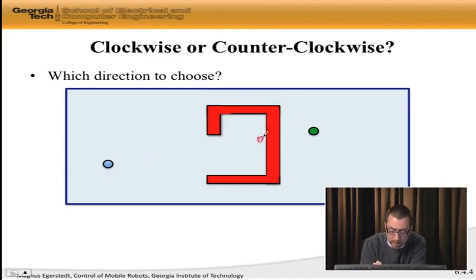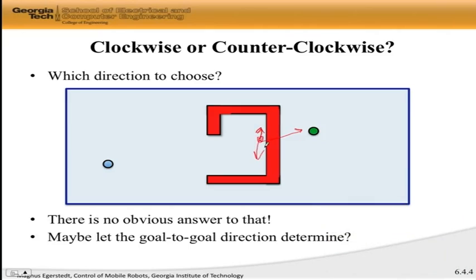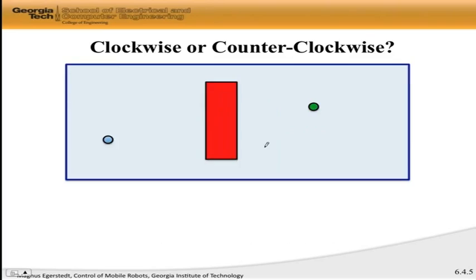But here's one thing one can observe: go to goal here wants to move you kind of upwards a little bit. So maybe we can let go to goal make the choice for us. Go to goal wants to drive us a little bit in this direction, not at all in that direction. So the idea is that there is no obvious answer given what local information the robot has. The robot doesn't know globally what the world looks like. So maybe we can let this go to goal behavior decide which direction we should go in.